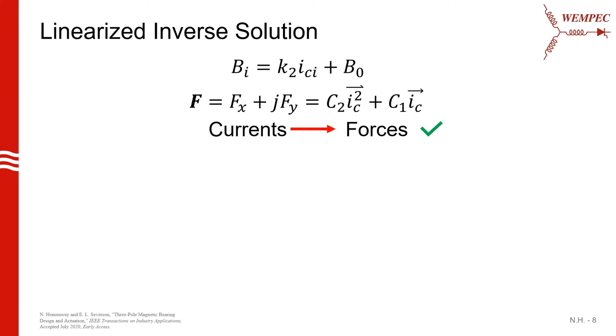We just pointed out that the total field in front of each tooth can be split up into a bias term and a control term. We can further note that the control field in front of each tooth is just proportional to the current flowing in that tooth's coil. If we substitute this total expression into the force equation that we developed earlier, we end up with an equation of this form here, where C2 and C1 are just constants that multiply the quadratic and linear term respectively. So if you give me three phase currents, I can convert them into space vectors and compute my corresponding force output.